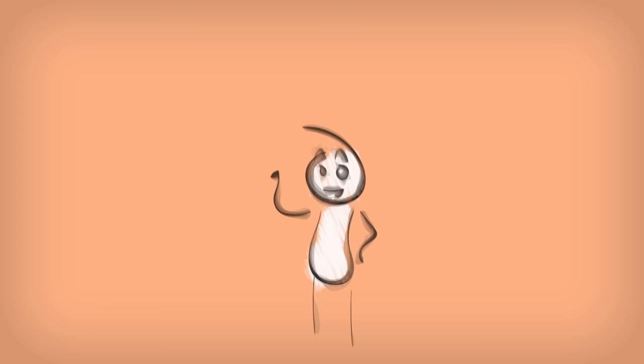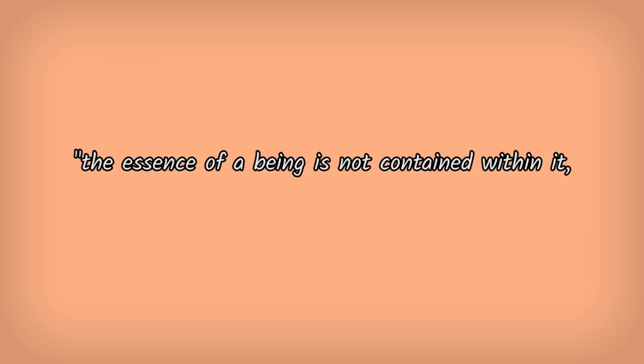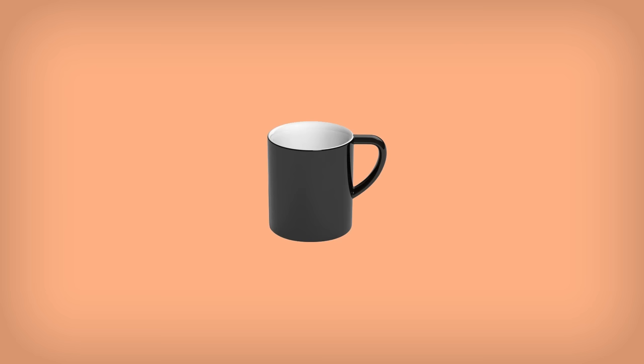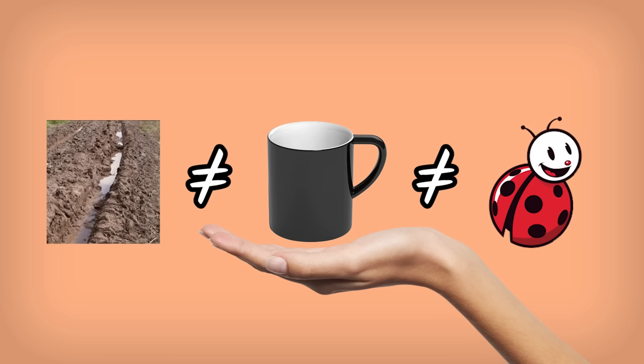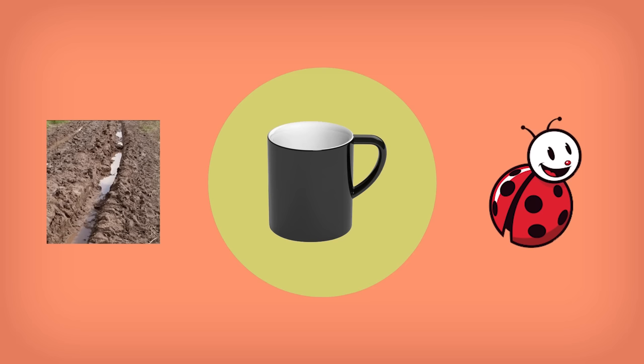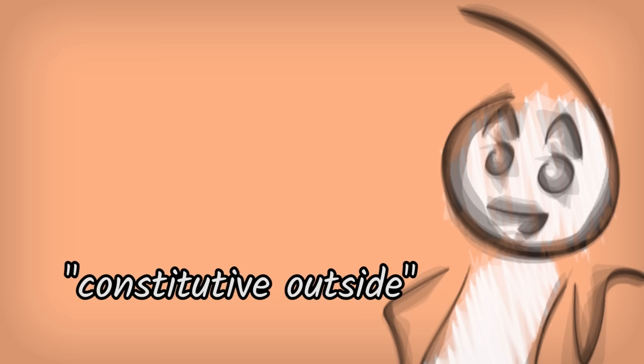And if we look at what structuralism did, it was one hell of a new framework. To put it in one sentence, the essence of a being is not contained within it, but rather in a difference between it and other beings. Or to put it even shorter, a being is determined by what it is not. We could call this 'it is not' a constitutive outside. The everything else that makes a being itself. Although this term comes from post-structuralist thinkers, like Judith Butler or Ernesto Laclau.